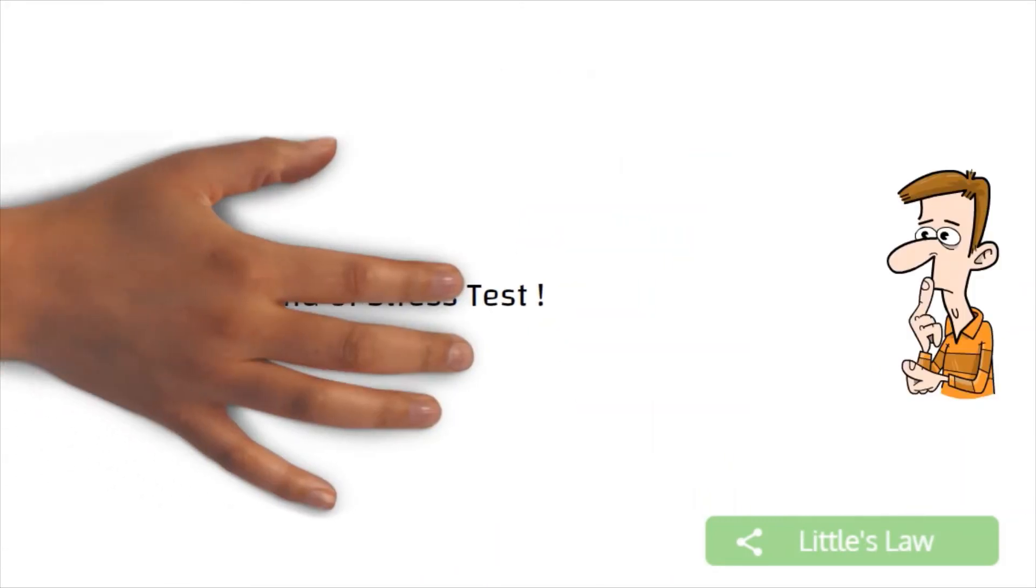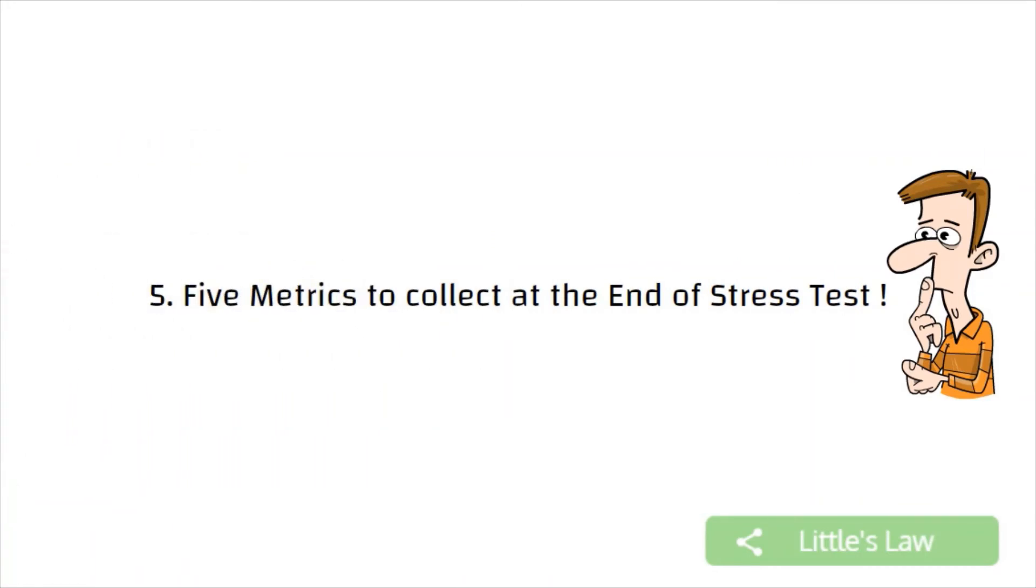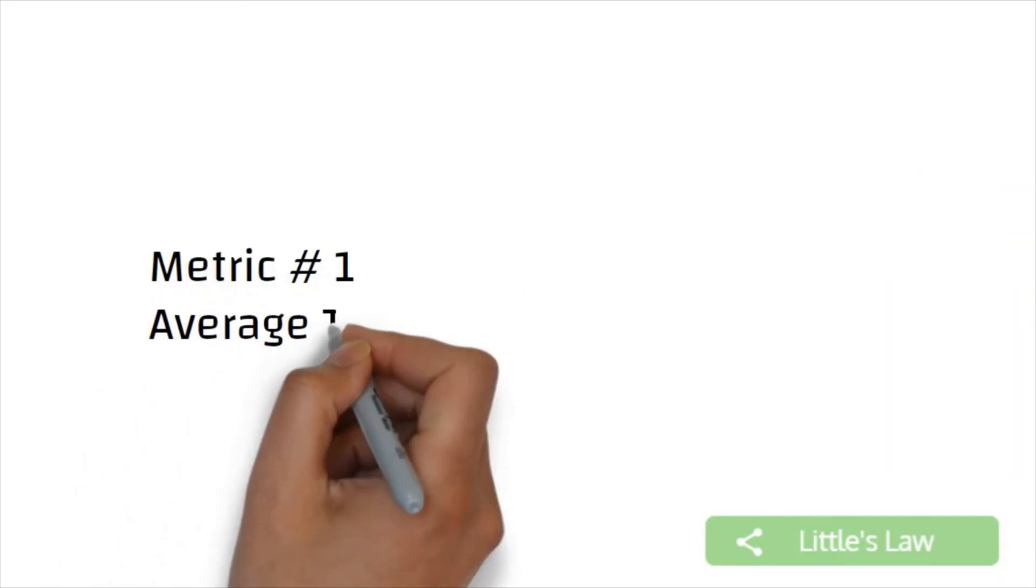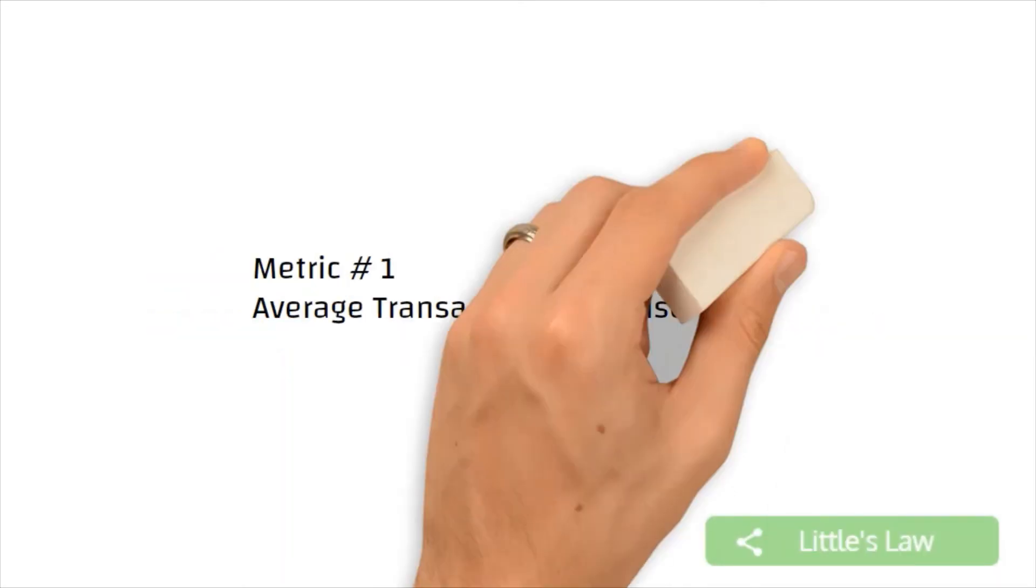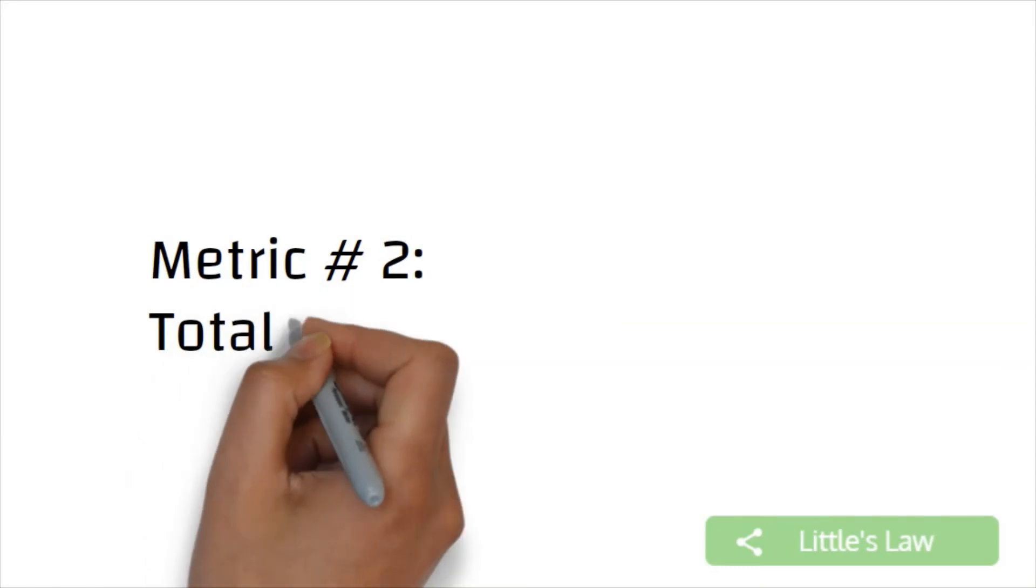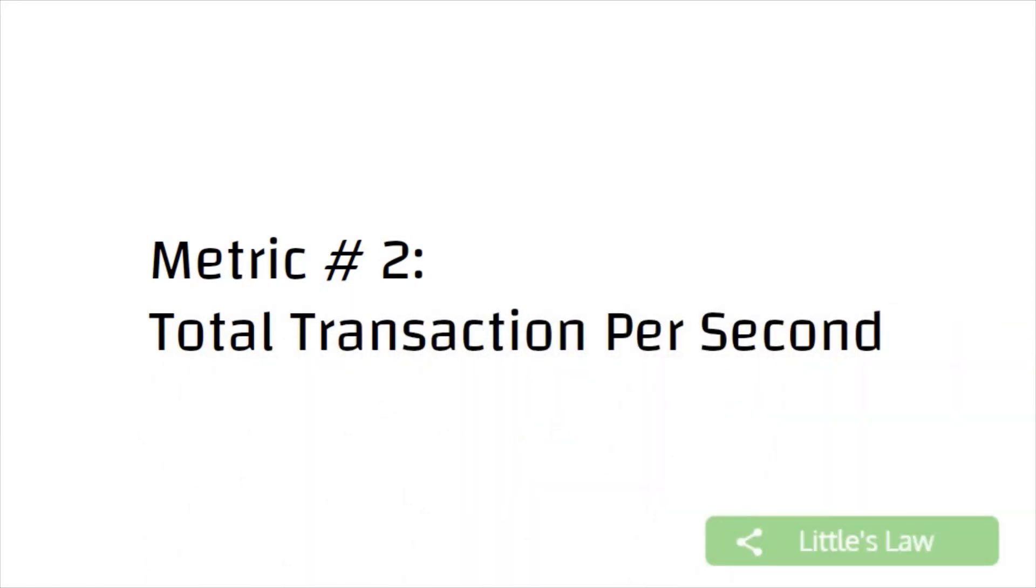So let's now see the metrics that we have to collect at the end of the stress test. We have to collect the following five metrics. So let's see them one by one. Metric number one, average transaction response time, which is the average time taken by the application to perform transactions. Second metric would be total transactions per second, which is the number of transactions that are passed, failed or stopped during the stress test. This also helps us to understand the throughput during the stress test.